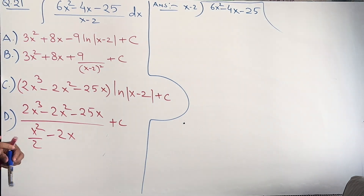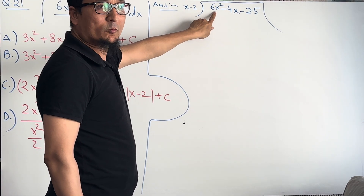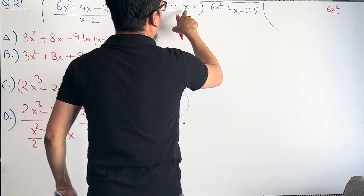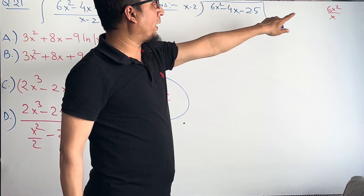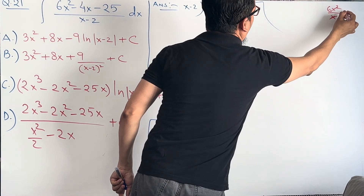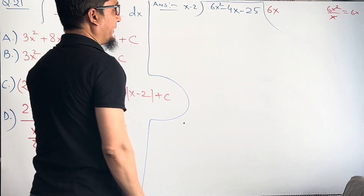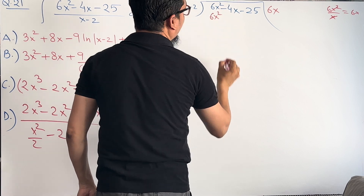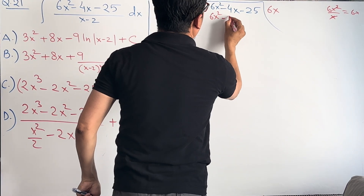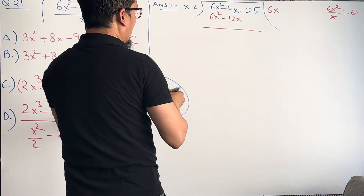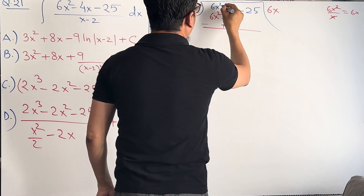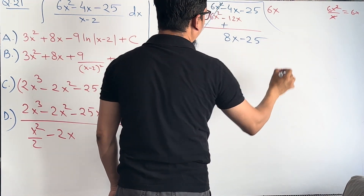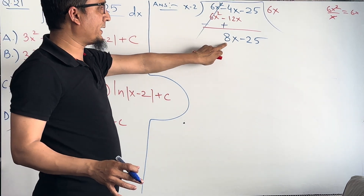By the division process, take the first term of the numerator: 6x². Divide 6x² by x — the x cancels — giving 6x. Write down 6x as the first term of the quotient. Now multiply 6x by (x - 2): 6x times x gives 6x², and 6x times -2 gives -12x. Change the sign to subtract, so we get -6x² and +12x. The 6x² terms cancel, and 12x - 4x gives 8x, bringing down -25.